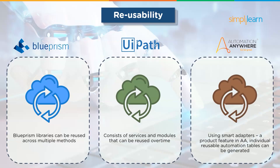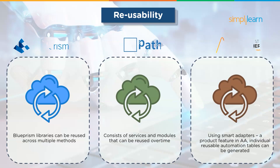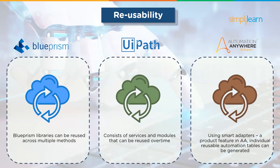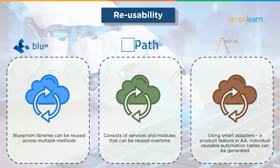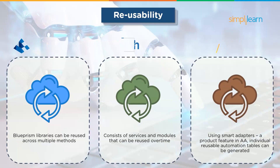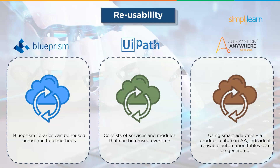Moving on, the next factor is reusability. Blue Prism consists of a library of business objects that can be reused across multiple methods and offers high reliability. UiPath consists of processes that can be used for various synthesis services with several workflow modules, offering a high degree of usability and moderate reliability. In case of Automation Anywhere, using smart adapters — a product feature — individual reusable automation tables can be generated, and it also offers high reliability.